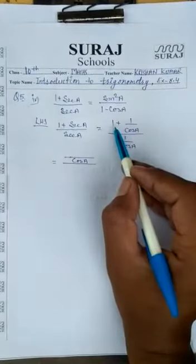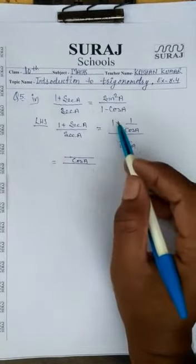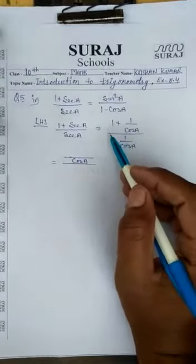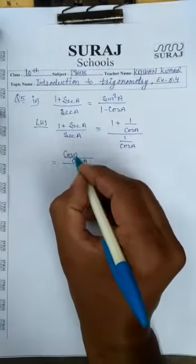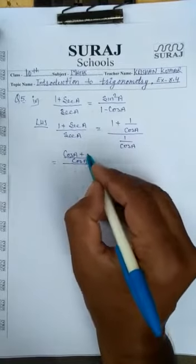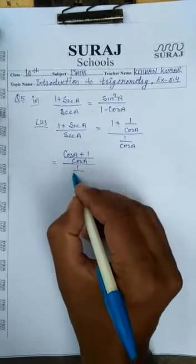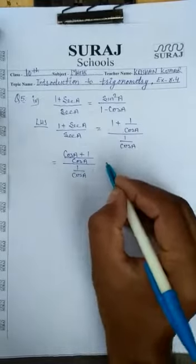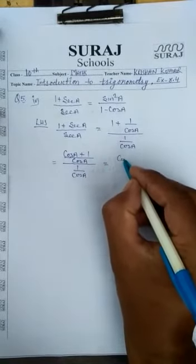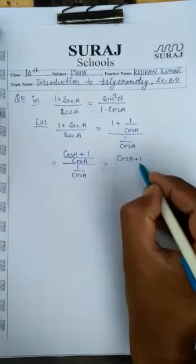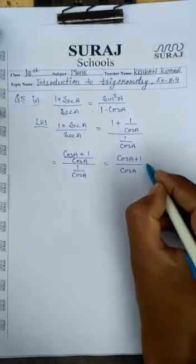Here in the numerator, 1 is a whole number, so it will directly multiply by the LCM. Taking LCM in the numerator gives us cos A plus 1, all upon cos A, into the denominator.